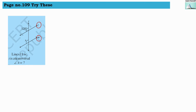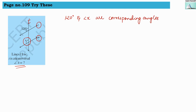Another example: line L is parallel to M. They both are parallel and T is the transversal. What will be angle X? As you can see, 120 degrees and angle X are corresponding angles, and that's why their measures are the same — they are equal. So angle X equals to 120 degrees because L is parallel to M and they are corresponding angles.